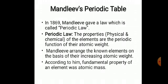Mendeleev is the first scientist who arranged elements in groups and periods. He proposed a law called the periodic law. What is the periodic law? The properties — both physical and chemical — of elements are the periodic function of their atomic weight. This means the fundamental property used to arrange elements is atomic weight or atomic mass. Mendeleev arranged the elements on the basis of increasing atomic weight.